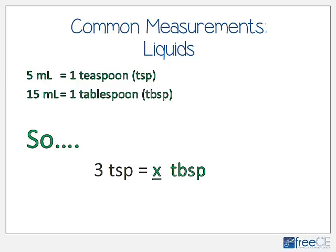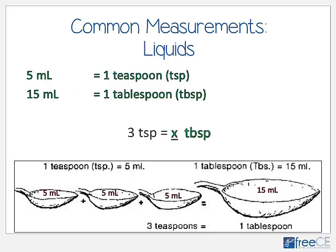From these common measurements, let's do a couple of quick conversions. How many tablespoons are in three teaspoons? There are 5 milliliters in a teaspoon and 15 milliliters in one tablespoon. If there are 5 milliliters in one teaspoon, multiply 3 teaspoons by 5 milliliters to get 15 milliliters total — and 15 milliliters equals one tablespoon. So three teaspoons equals one tablespoon.